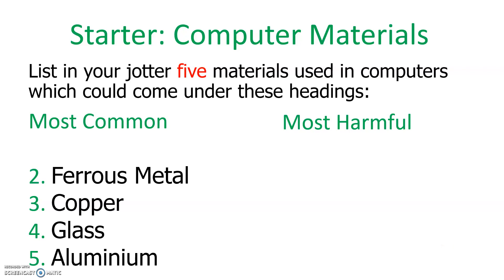Number two, we've got ferrous metal. The word ferrous just means it contains iron, so it's a specific subgroup of metals. And the most common one is plastic, because that's used for parts of the casing and housings for different parts inside the computer. So those are your five most commonly used materials — the ones used in the biggest amount in building your computer systems.